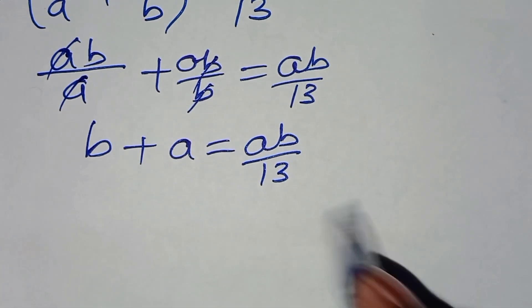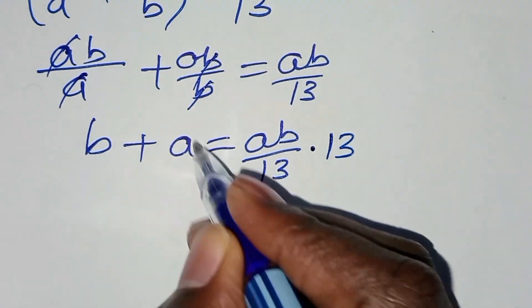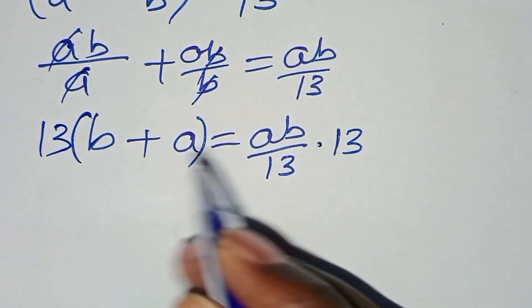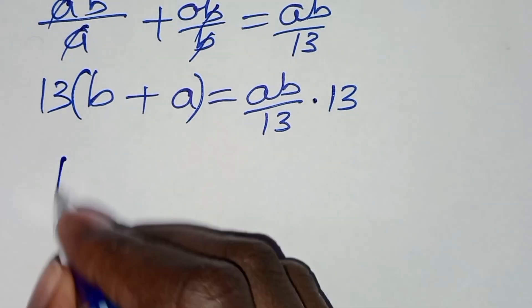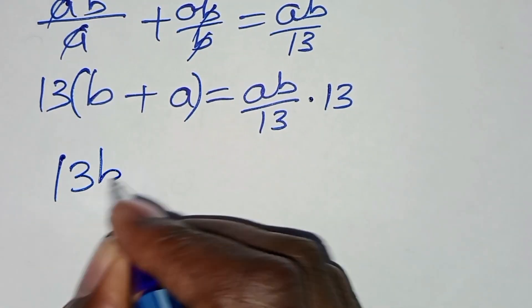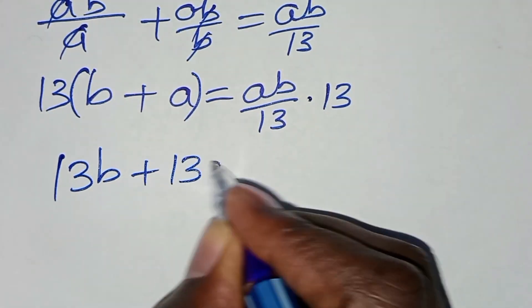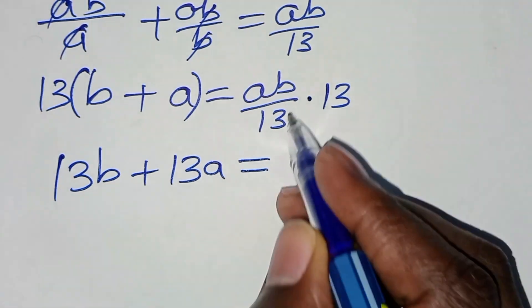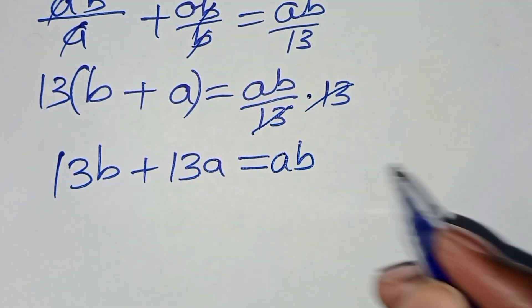The next step is to multiply both sides by 13, so that we'll have 13B plus 13A, and this is equal to AB.